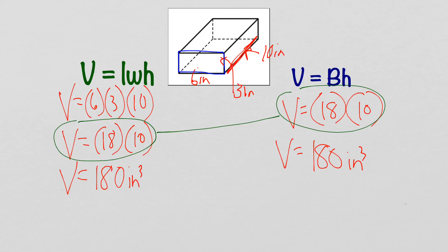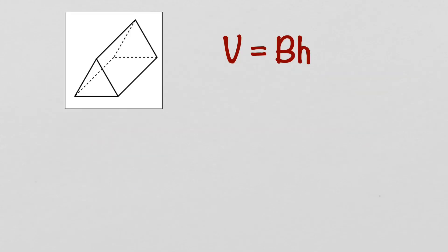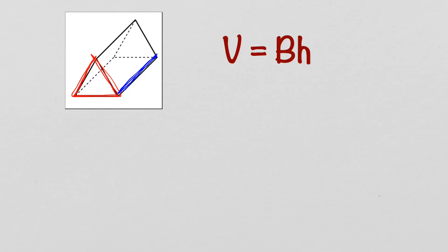So capital B times H is what we're going to use — let's see what that looks like with different prisms. Here is a triangular prism. We want to think about the base shape, which should hopefully be obvious — it's a triangle. The height is what connects that base triangle to the identical base on the other side.